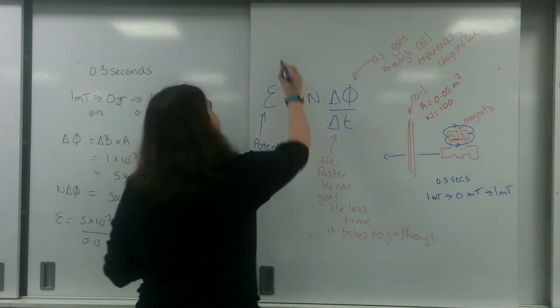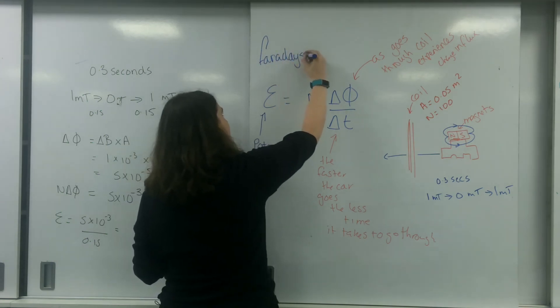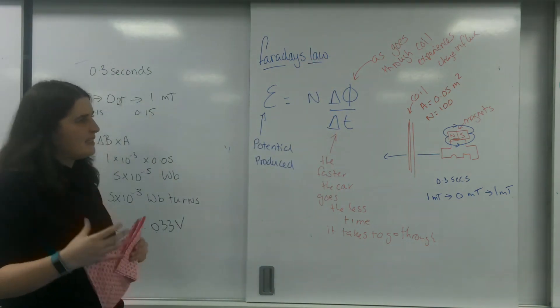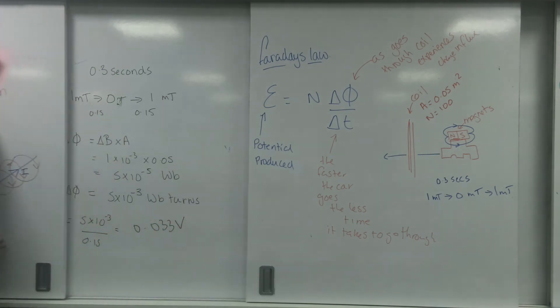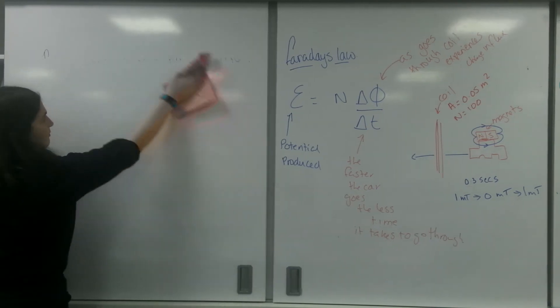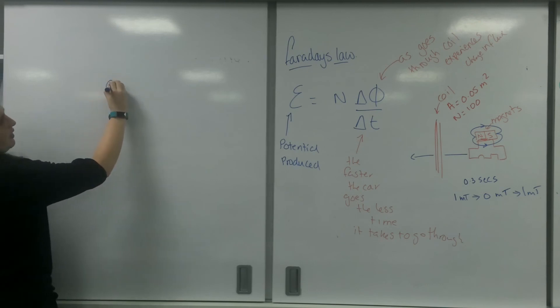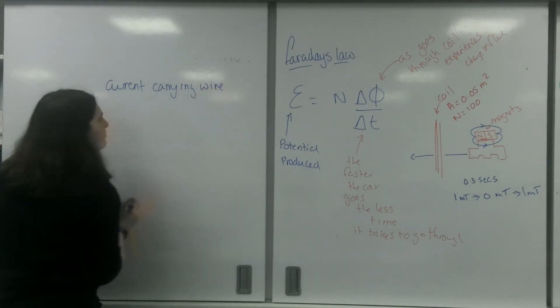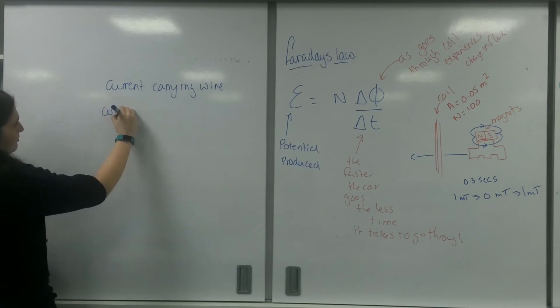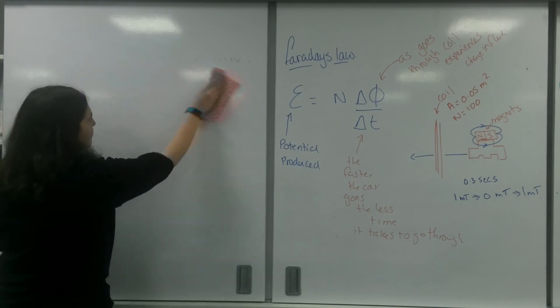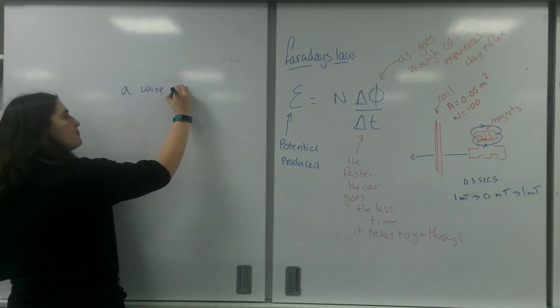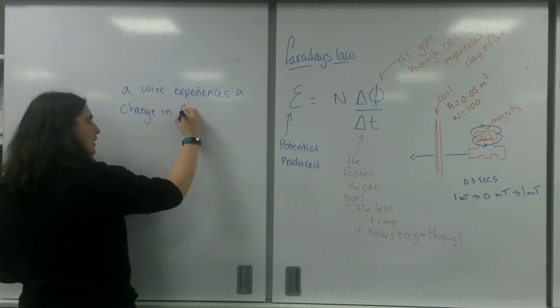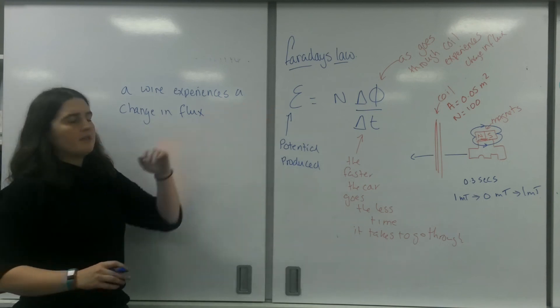So this here is Faraday's law. And to verbally explain this, to verbally explain Faraday's law in words, is that—correction—a wire experiences a change in flux. An object experiences a change in flux.